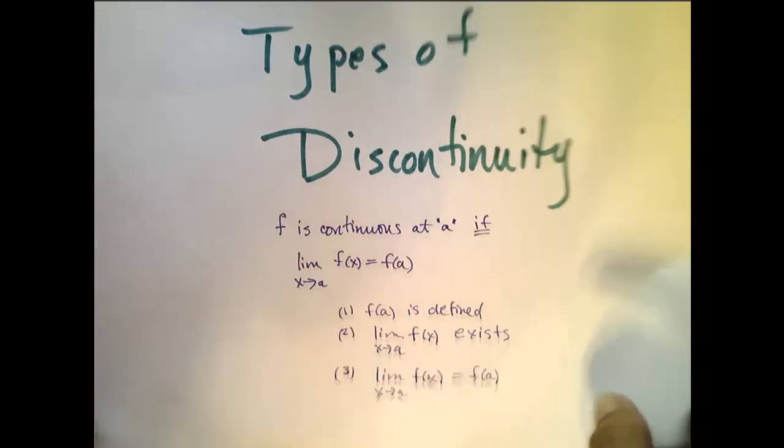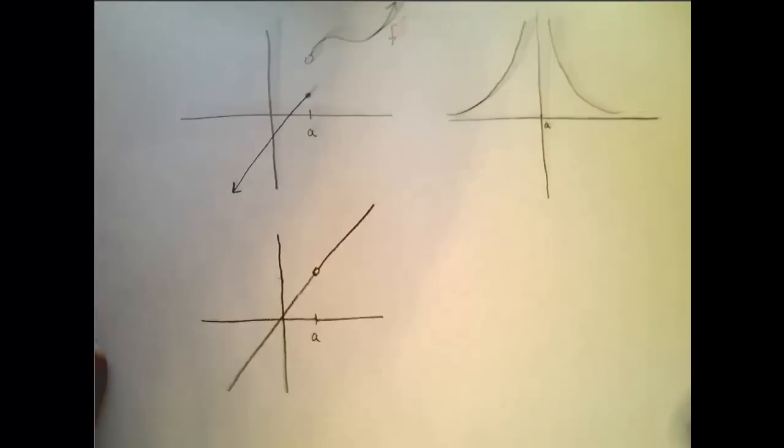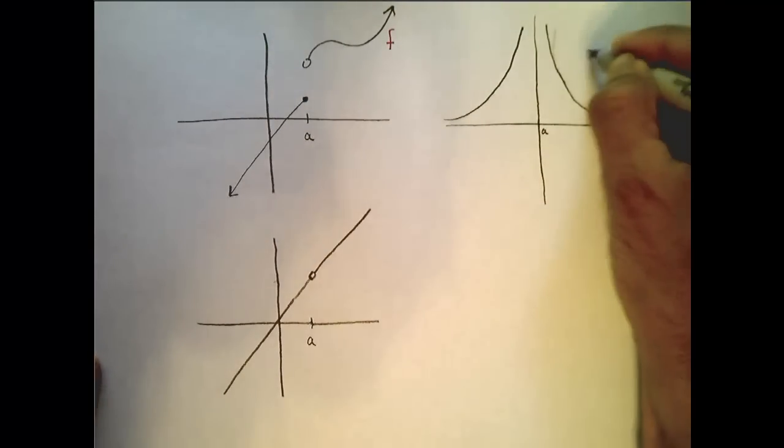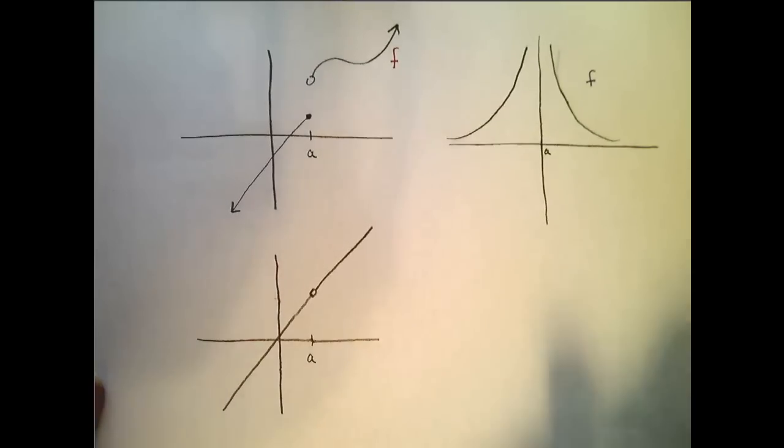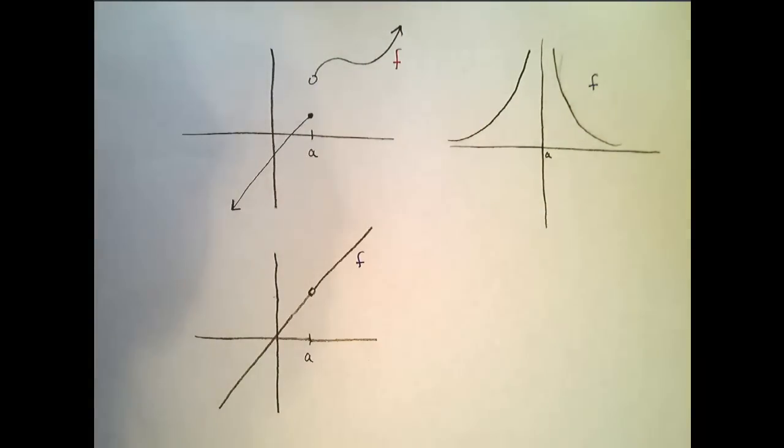So let's look at some graphs where one of those conditions fails. Here I have three different graphs of some functions, all of which have some form of discontinuity at a.